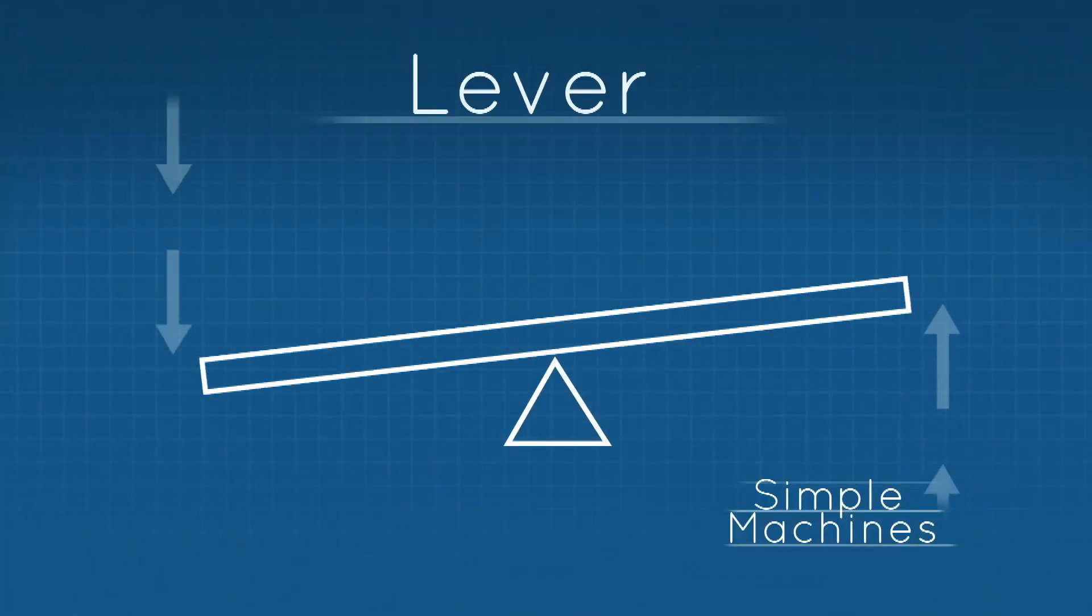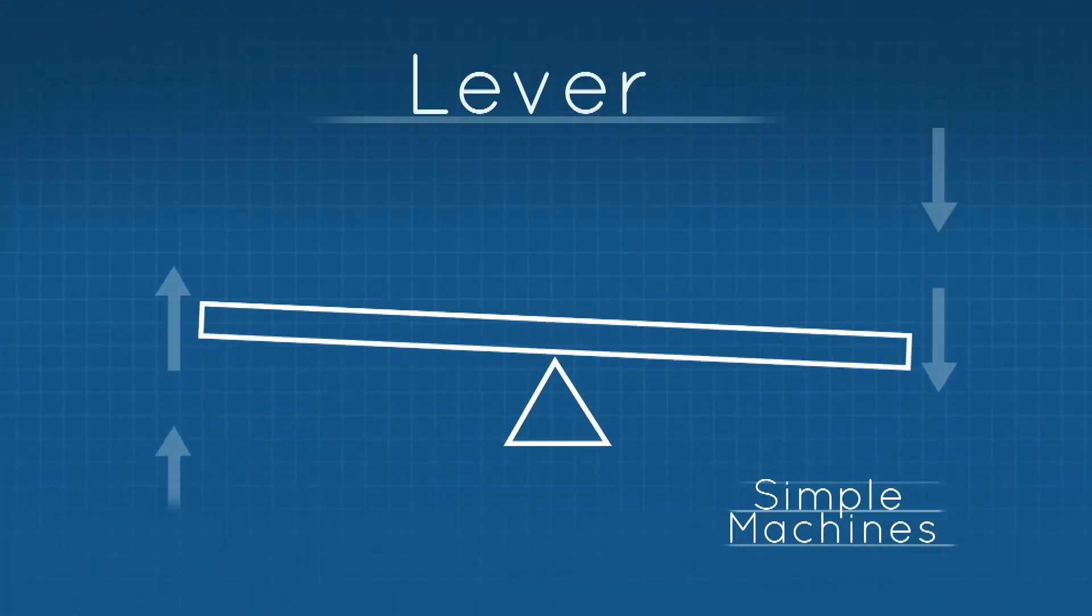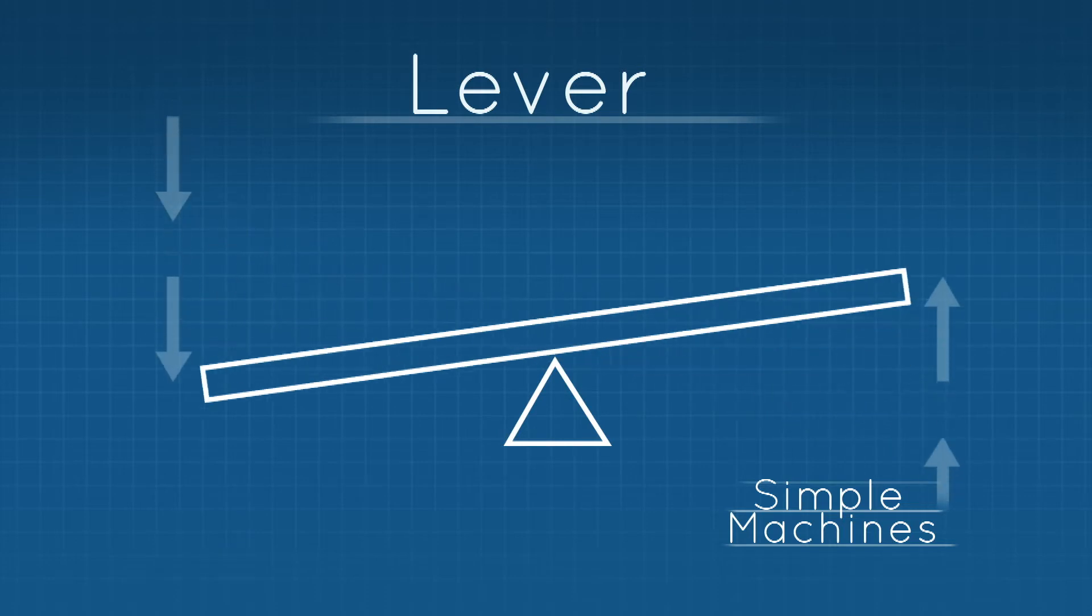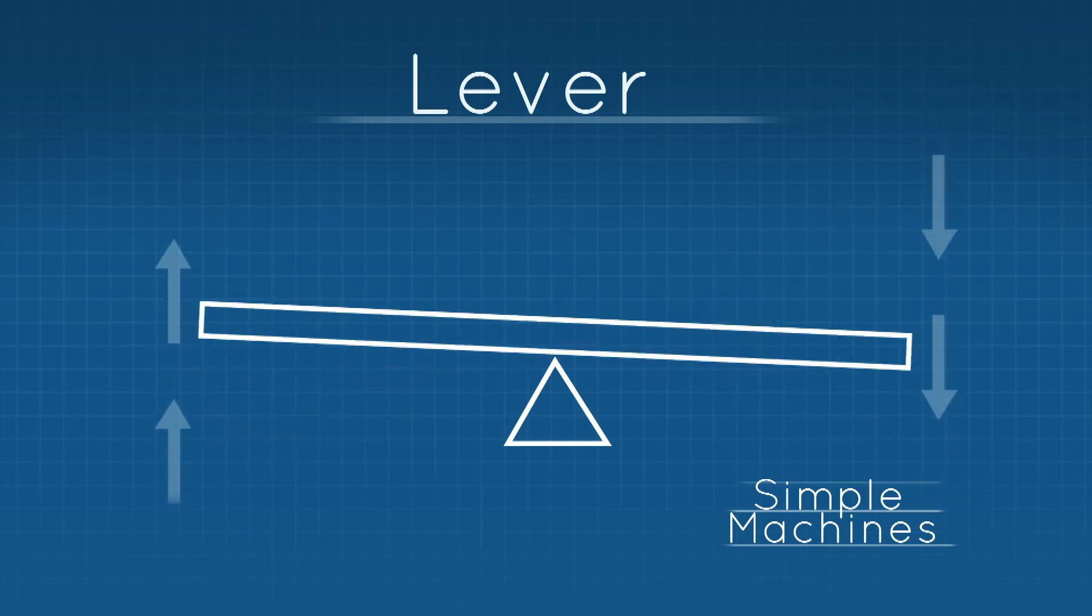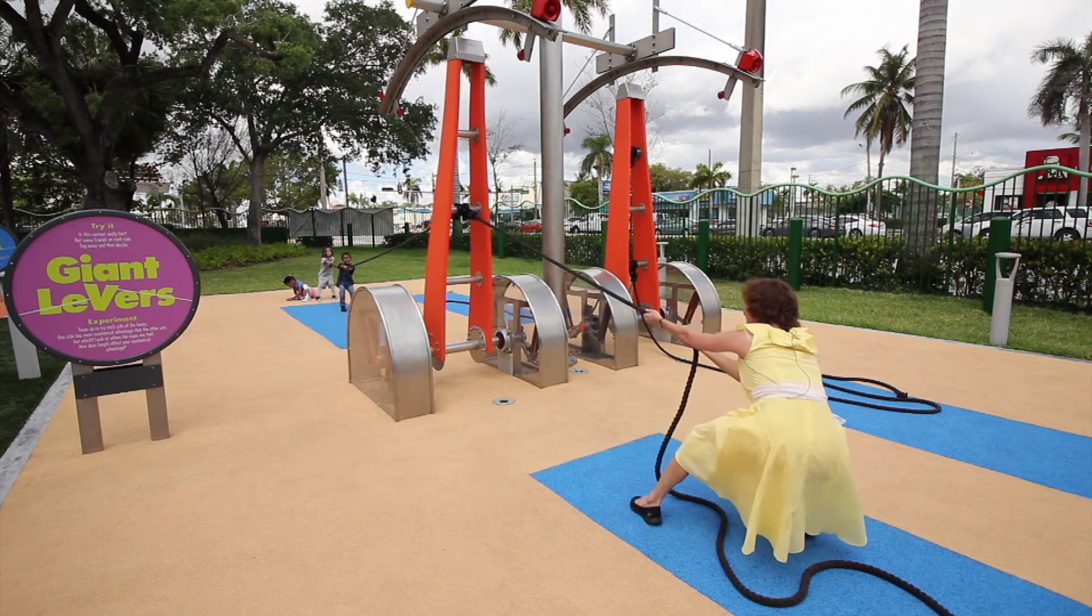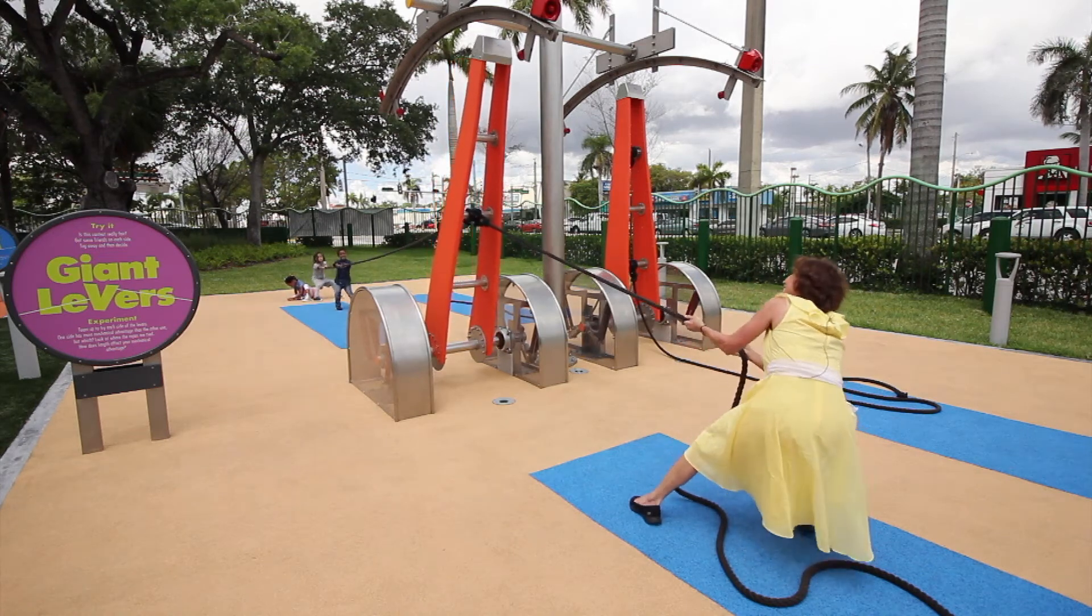Lever. A lever is a simple machine. It is a plank that is free to move on a pivot point called a fulcrum. A person applies pressure to one side to move the other.